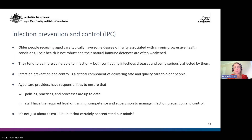Older people receiving aged care are typically much frailer than other older people. They often have chronic progressive health conditions and their health is not robust — they tend to be more vulnerable to infection, both in contracting infectious diseases and being seriously affected by them. Infection prevention and control is a critical component of delivering safe and quality care to older people. Aged care providers have a responsibility to ensure their policies, practices and processes are current and up to date, and that staff have the required level of training, competence and supervision to manage IPC — and of course, it's not just about COVID-19.